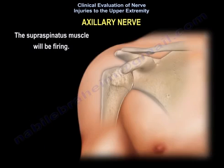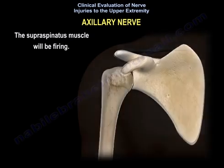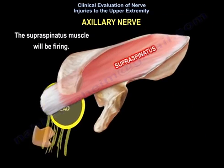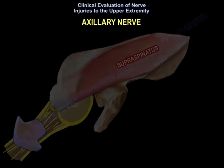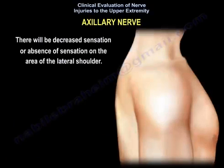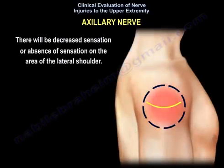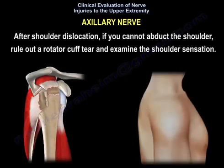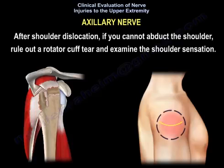The supraspinatus muscle will be firing, and you will have decreased sensation or absence of sensation over the area of the lateral shoulder. After shoulder dislocation, if the patient can abduct the shoulder, rule out rotator cuff tear and examine the shoulder sensation.